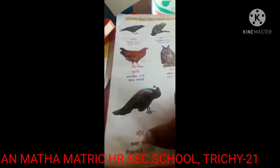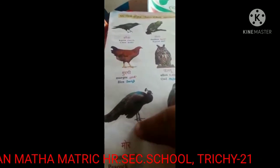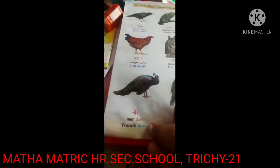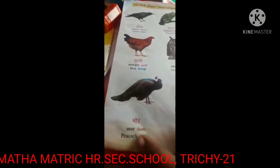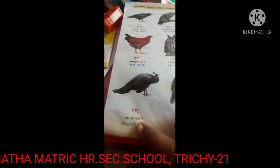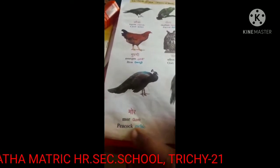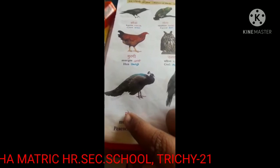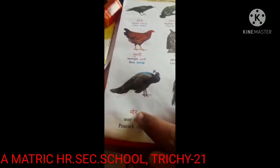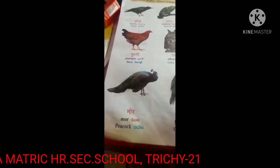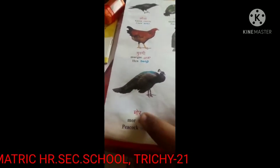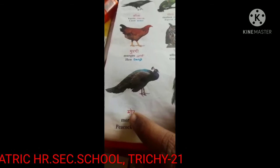Next one is mor. Peacock we call in Hindi as mor. In Tamil it is mayil, in Hindi it is mor. Consonant 'ma' and 'ra' — only two letters and only one symbol is used with 'ma', which makes the consonant 'ma' as 'mo'. So, mor — peacock we call as mor.